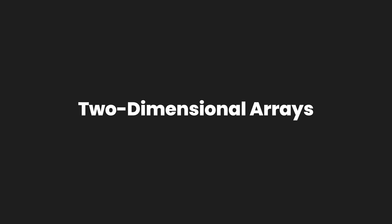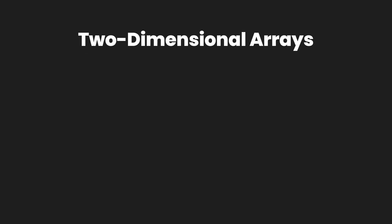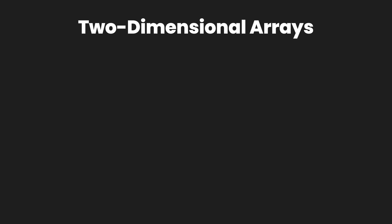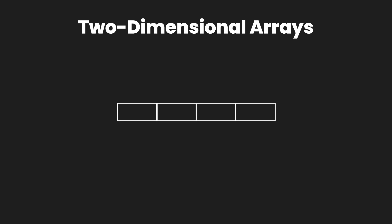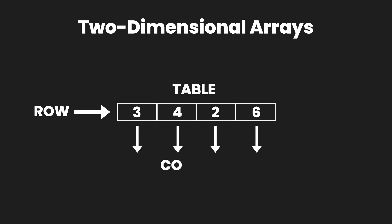So what is a two dimensional array? To understand a two dimensional array we are going to look at your screens right now. You have an array containing four elements. Let's fill up this array with some random integer values: three, four, two, and six. If we look at this array and consider it to be a table, we can say that this table contains one row and four different columns.